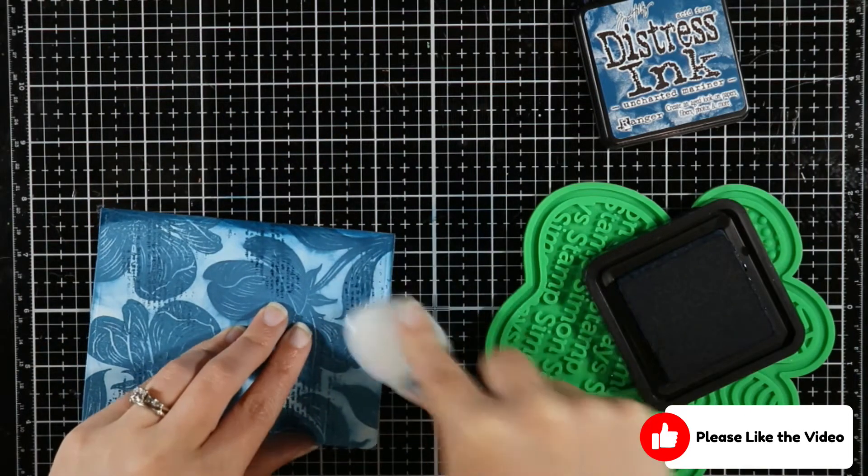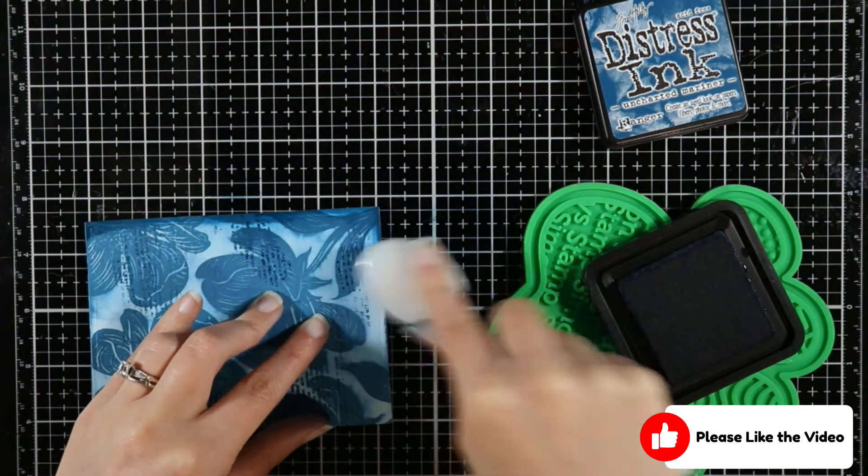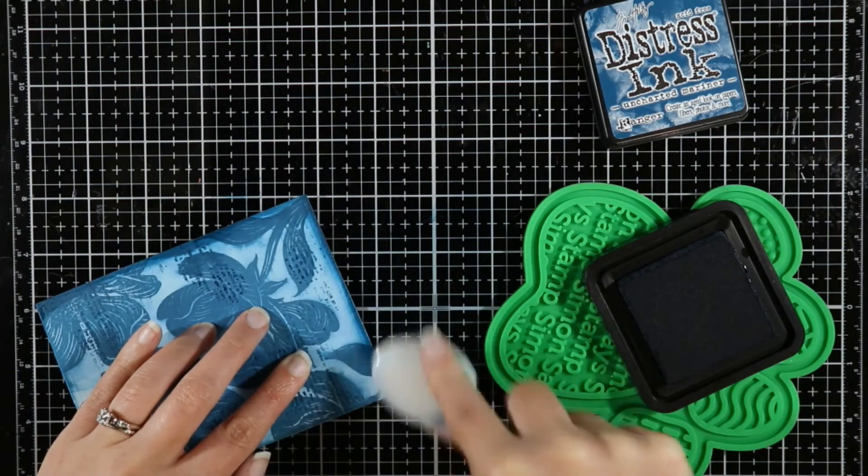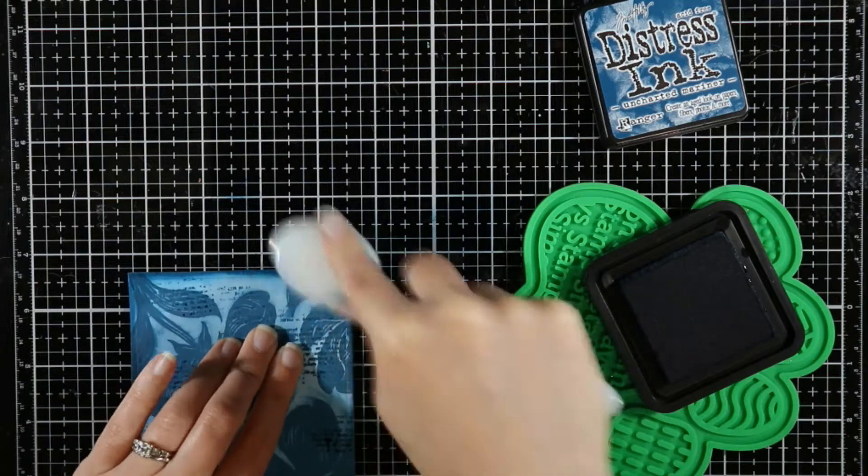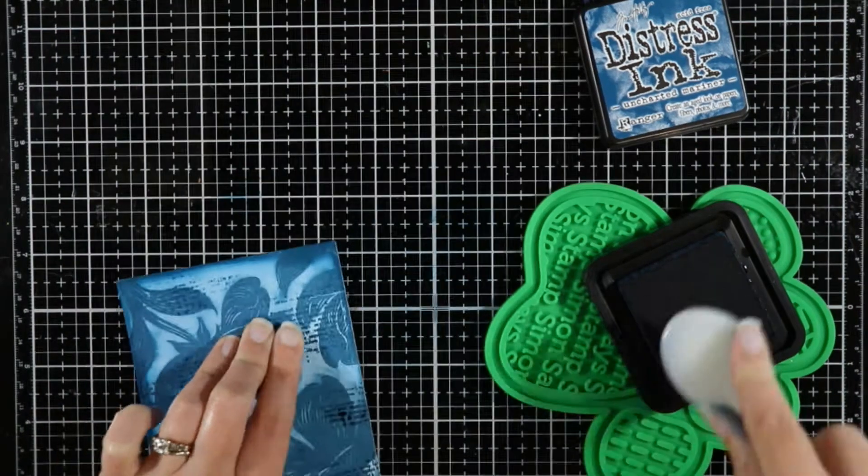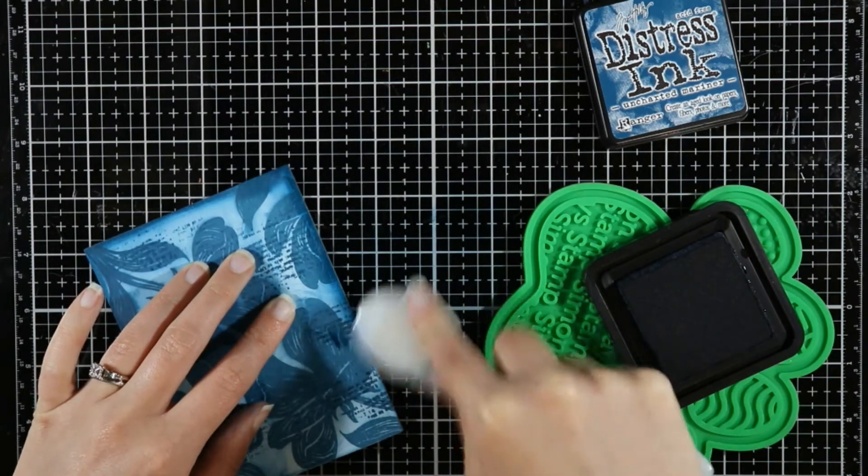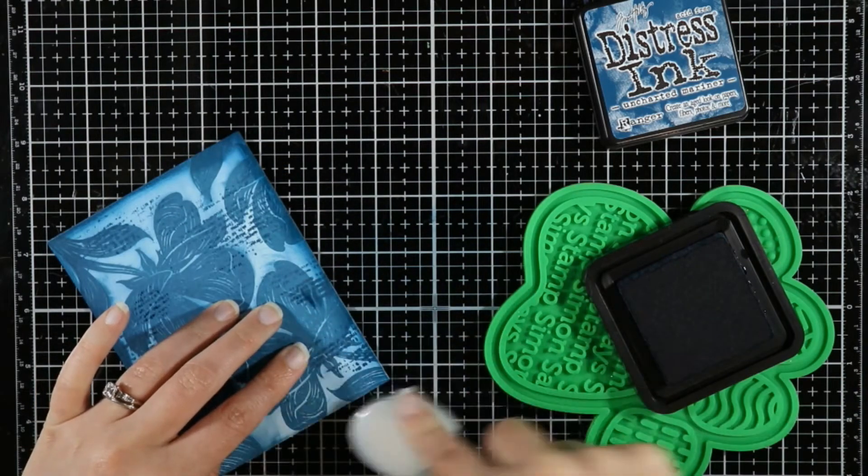I chose the ink over the oxide again. Now I'm going around the edges with the ink, and I chose the ink for the same reason because it is going to give me a brighter, darker look, whereas the oxides will fade into the back.